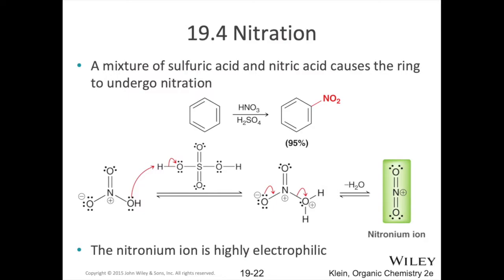Next up, we have nitration. Here we're adding on a nitro group — that's just an NO2 group. The reagents we're going to use are concentrated nitric and sulfuric acid. Our sulfuric acid here is a proton source, and it converts our nitric acid into the nitronium ion. Basically, we protonate the OH group on our nitric acid, it leaves as a water molecule, and you are left with the nitronium ion. Notice the similarities between our nitronium and sulfur trioxide in the previous sulfonation example — we have an atom in the middle connected to electronegative oxygens pulling electron density away. In the case of nitrogen, we have a formal positive charge, so this is definitely going to seek that electron-rich benzene ring.